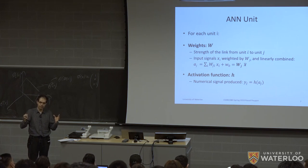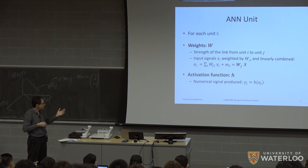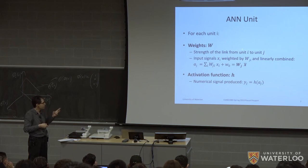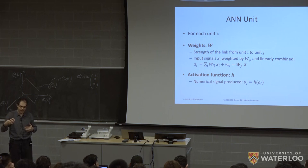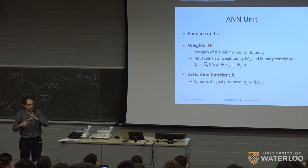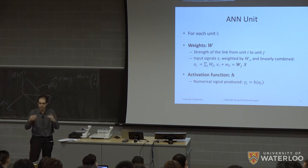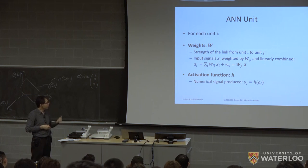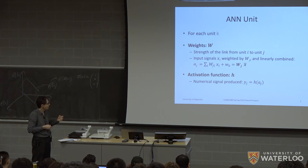The basis of a neural network is the node or unit, and the network has many units connected with links. If each unit is indexed by i, and we consider units i and j, then the link between them has an associated weight. The weight scales up or down the numerical signal. Concretely, we compute a linear combination of the inputs: a_j = sum over i of w_ji times x_i, plus w_j0.